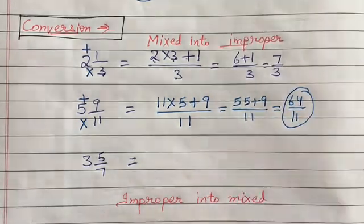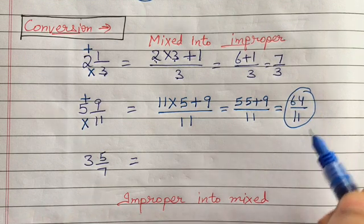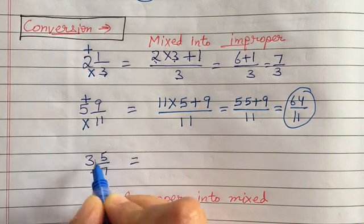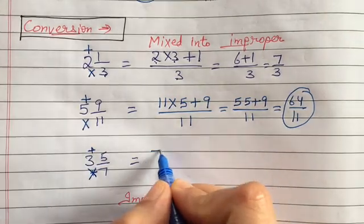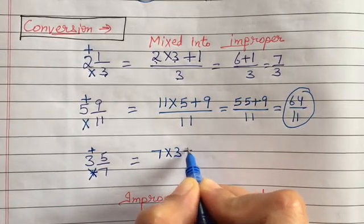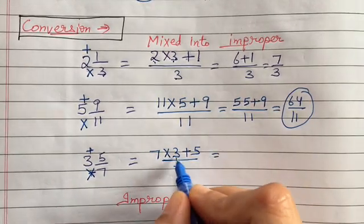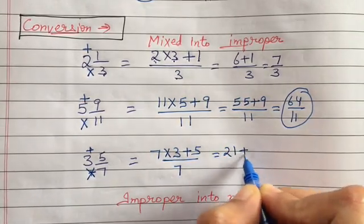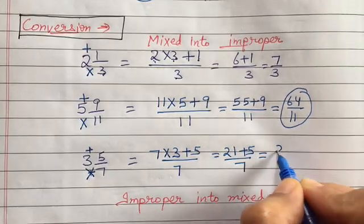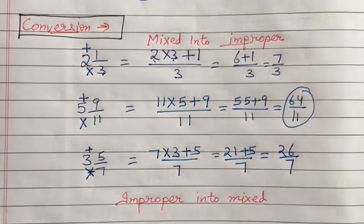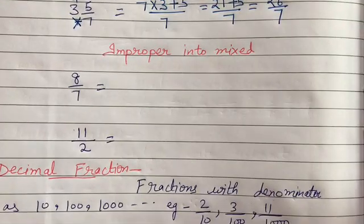You can check: the numerator is bigger than the denominator. Here it is multiplication and here it is addition. Another example: 3 and 5 by 7 — it is 7 multiplied by 3 plus 5 upon 7. 7 times 3 is 21, plus 5 is 26 upon 7. This is how you convert a mixed fraction into an improper fraction.